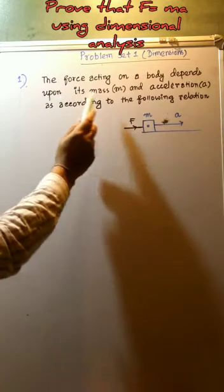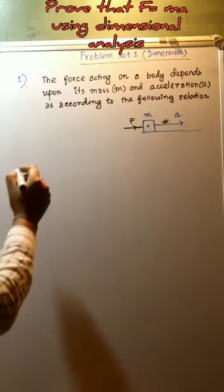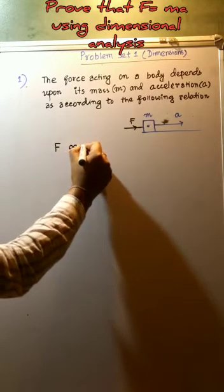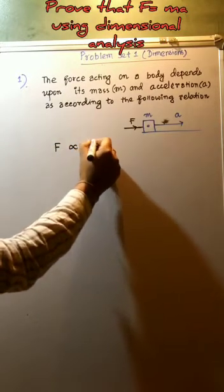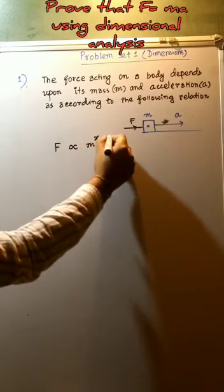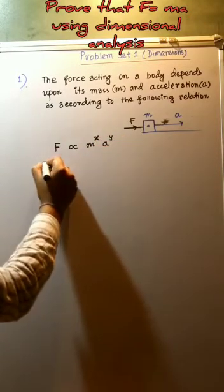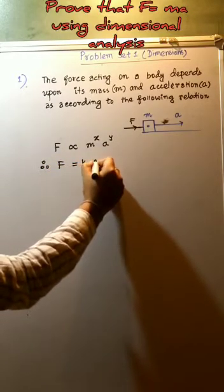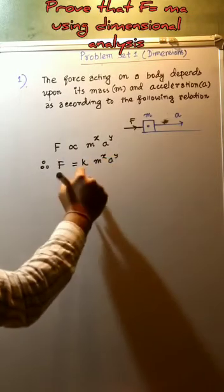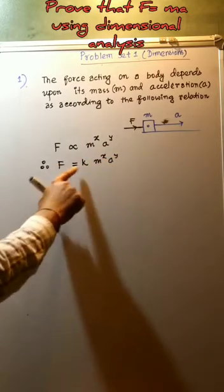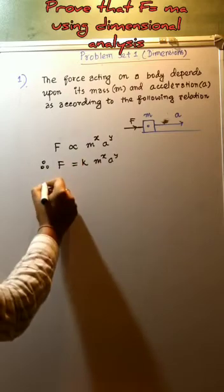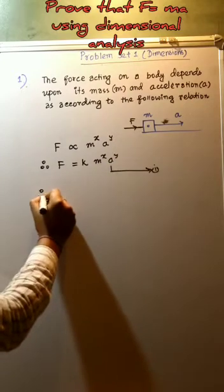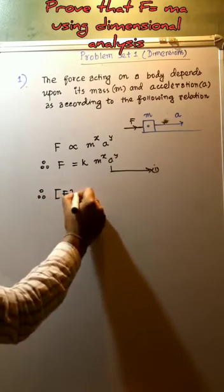This force F acting on the body depends upon its mass M and acceleration A according to the following relation: force is directly proportional to M to the power X and A to the power Y. Therefore, force is equal to a constant K times M to the power X times A to the power Y, where K is the constant of proportionality. This is equation one.